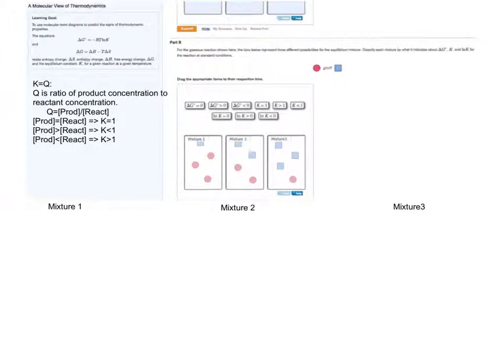For mixture 1, we can see that the relative concentration of the product here is less than the concentration of the reactants shown here. Therefore, for mixture 1, K will be greater than 1.